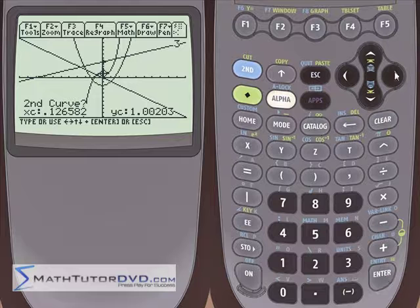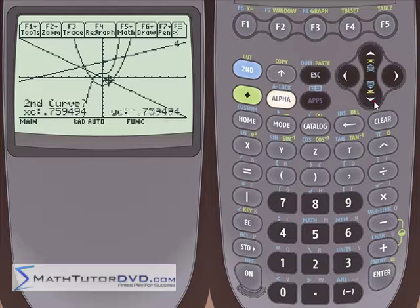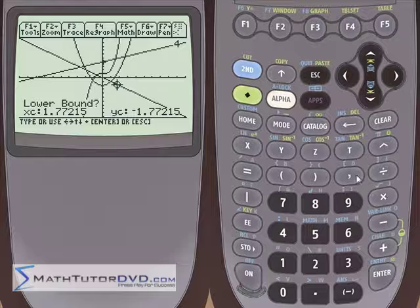Now it's asking us for the second curve, but that's y3. So we're on that cubic, but that's not what we want. So we hit the down arrow again and it snaps back to this other line here. So we'll tell it that this is our second curve.